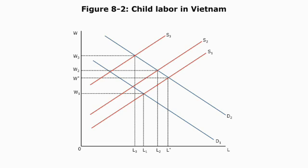How much the supply curve shifts inward determines what ultimately happens to child labor. If it shifts in a little, from S1 to S2, child labor on net still increases from L1 to L2 — the demand shift exceeds the supply shift, and free trade does increase child labor. But if supply shifts in a lot — if parents are much richer and send their kids to school — then the supply of child labor could fall from L1 to L3, producing less child labor even though demand went up. That's the income effect.